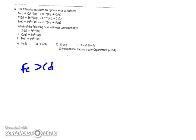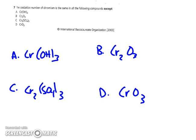Number six gives spontaneous reactions and builds a reactivity series. Fe reacts with Cd, so Fe is more reactive than Cd. Cd reacts with tin, so Cd is more reactive than tin. Tin reacts with lead, so tin is greater than Pb. From the three statements: tin able to react with Fe — no; Cd more reactive than Pb — yes; Fe more reactive than Pb — yes. So D would be the correct choice.